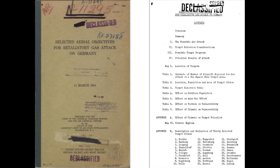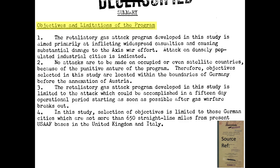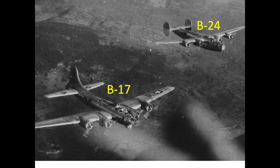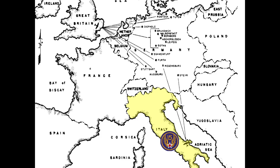All of the documents shown in this presentation are declassified. The Dictionary.com website defines retaliation as done in order to take revenge and returning evil for evil. The retaliation plan would only be implemented if Hitler or the OKW authorized poison gas usage against Allied troops or against Great Britain. The objectives of the Retaliation Chemical Warfare Plan include inflicting widespread civilian casualties, only attacking cities in the German Reich, limiting poison gas attacks to a 15-day window of aerial bombing, and selecting cities within 650 miles from U.S. air bases located in Great Britain and Italy. Both B-17 and B-24 U.S. heavy bombers were operating out of both Great Britain and Italy, as shown in this map.